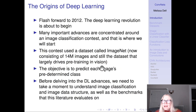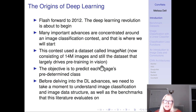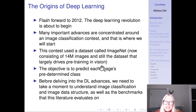Moving forward to 2012, the deep learning revolution is about to begin. Thanks to the availability of GPU compute, there was finally the computational power to optimize a deep model. Many of the advances we'll see with convolutional neural networks are concentrated around an image classification contest called ImageNet, which today is a benchmark dataset consisting of 14 million images across their classes. It's still the dataset that largely drives pre-training in vision applications — if you work in the vision field, you'll hear about ImageNet over and over again.